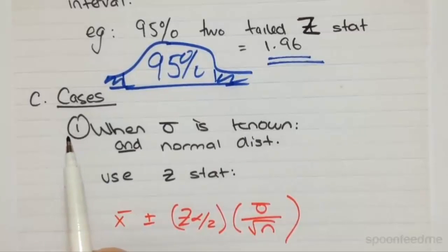Now, the first case we'll look at is when the standard deviation of the population is known. Now, in that circumstance, and you have a normal distribution for the population, in that circumstance, you can continue to use your Z statistic.